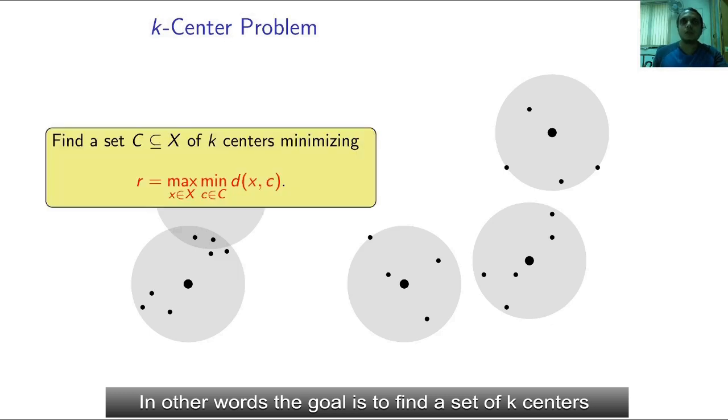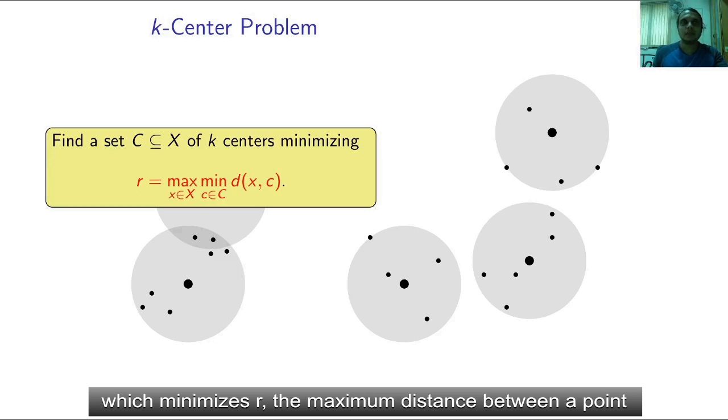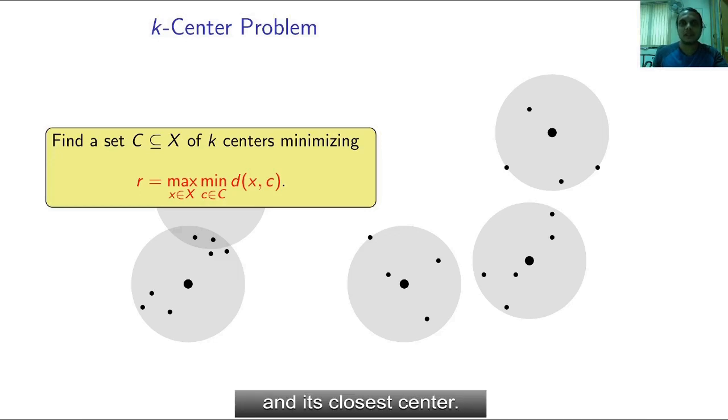In other words, the goal is to find a set of k centers which minimizes R, the maximum distance between a point and its closest center.